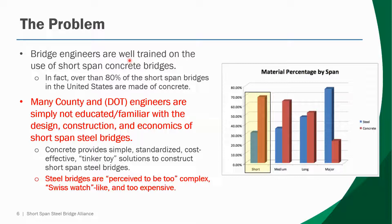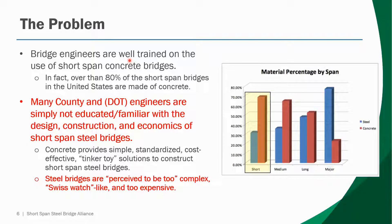The development of ESPAN 140 stemmed from a problem noticed in the industry over a number of years. Bridge engineers are typically well trained on short span concrete bridges, and more than 80% of short span bridges in the United States are concrete superstructures. Many county and DOT engineers are simply not as familiar with short span steel bridge design. There's also a perception that steel bridges can be too complex or too expensive, but that's not necessarily the case — you can use simple, practical details to develop a competitive and economical short span steel bridge.